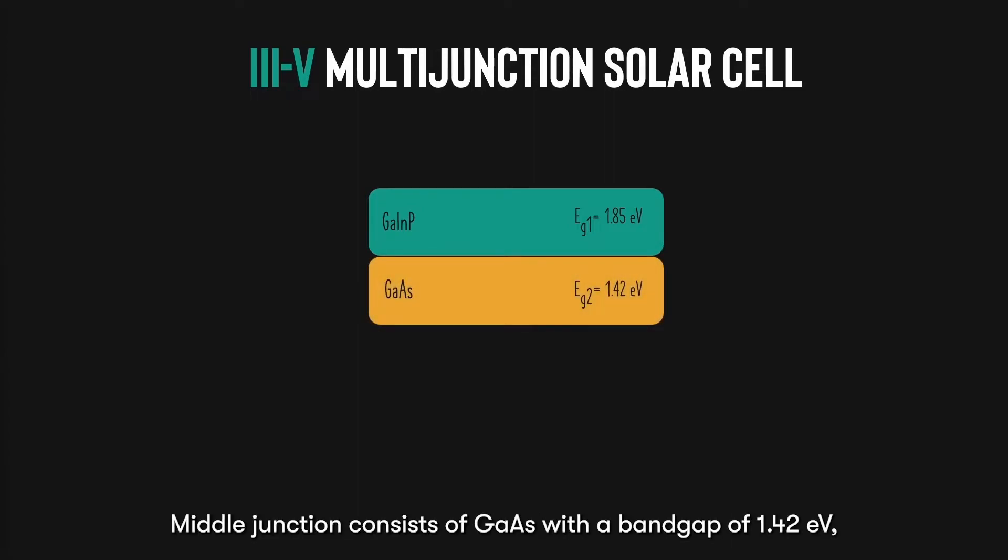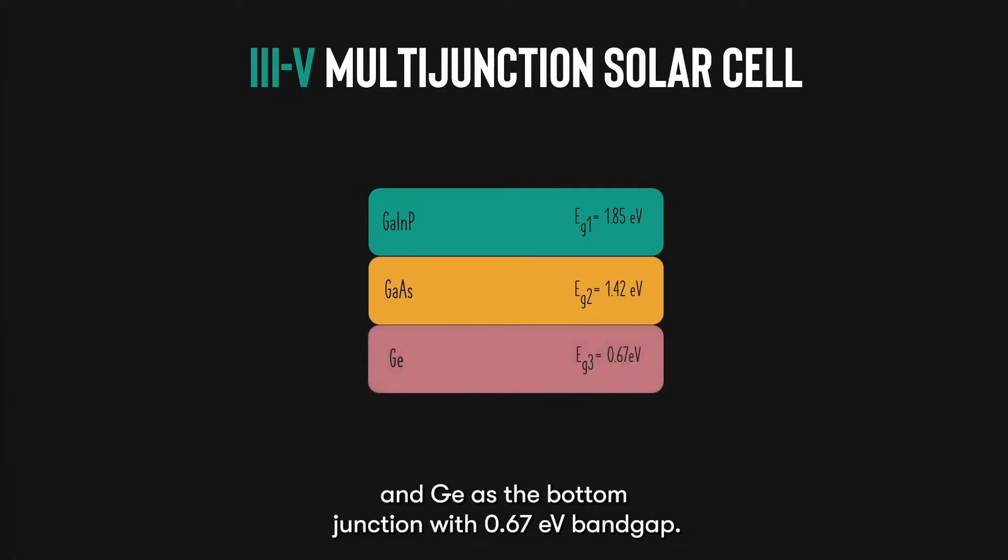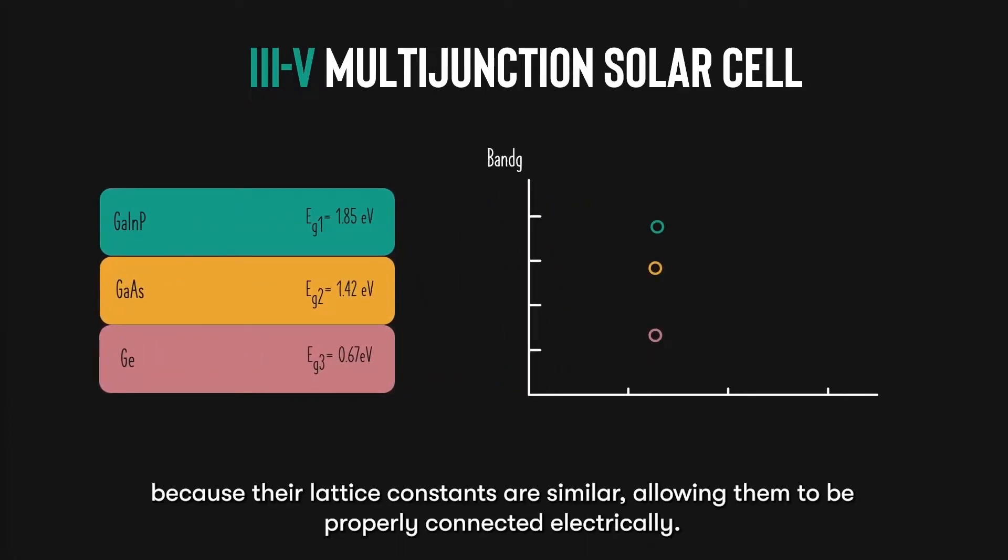Middle junction consists of gallium arsenide, with a bandgap of 1.42 eV. And germanium as the bottom junction with 0.67 eV bandgap. These materials are carefully selected because their lattice constants are similar, allowing them to be properly connected electrically.